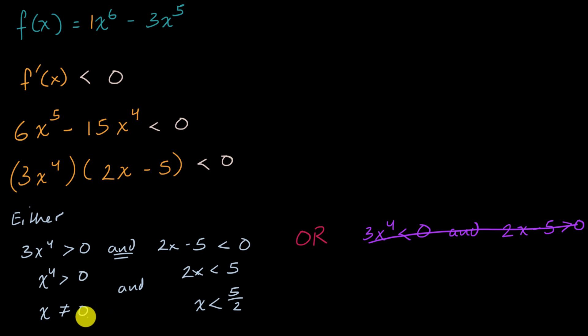We're decreasing over the interval from negative infinity all the way up to zero. And we're also decreasing from zero to five halves. And so if we're decreasing right to the left of zero, and we're decreasing to the right of zero, we're actually going to be decreasing at zero as well. So there's something interesting here. Even though the derivative at x equals zero is going to be equal to zero, we are still decreasing there. And so the interval that we care about, the interval over which we're decreasing is just x is less than five halves.